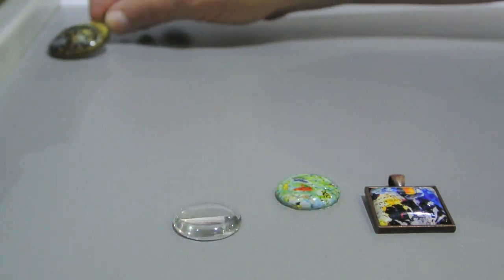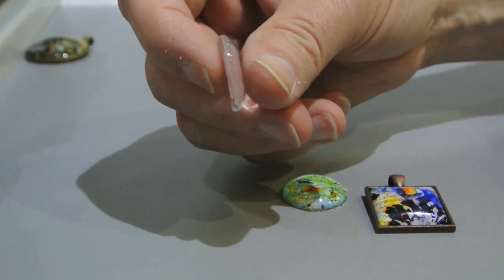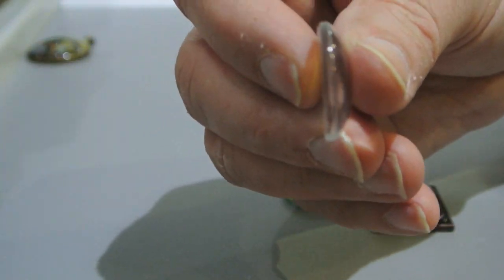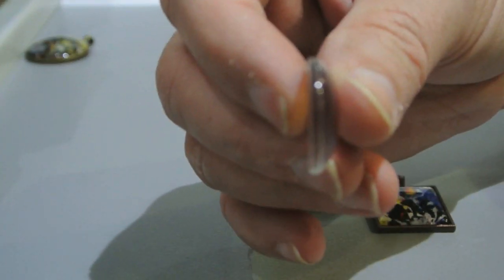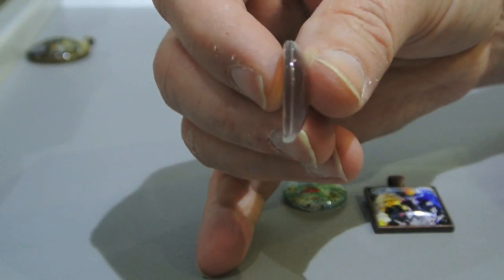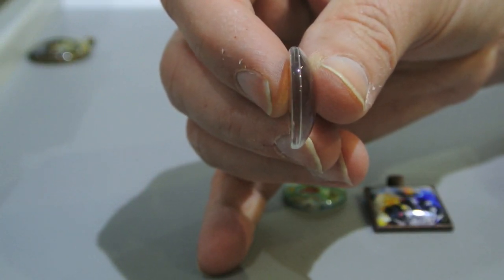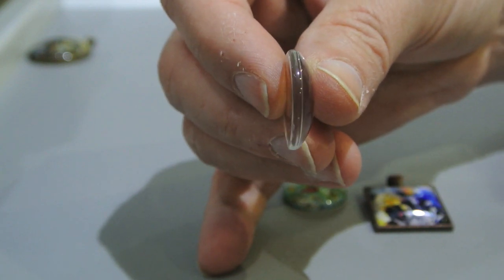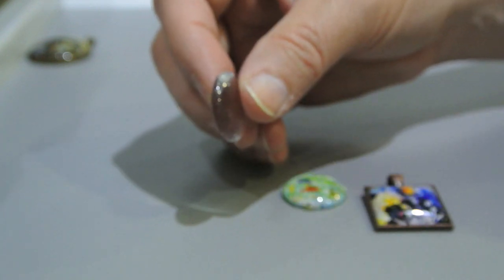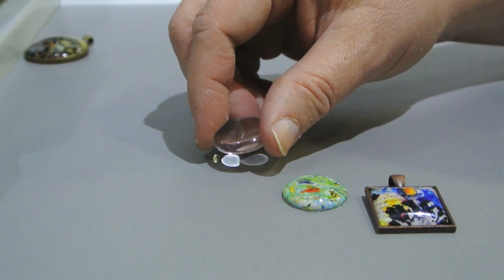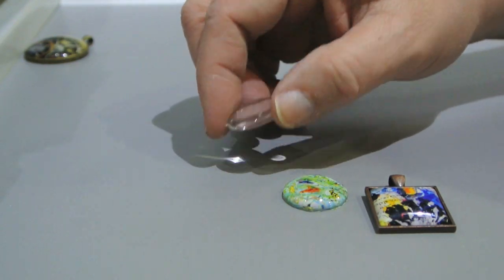But what I discovered with these is, I don't know if you can see that, but the edge, the back edge, there's a slight bevel between the front and the back. And when you put these together, it forms a little valley.